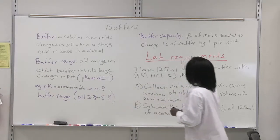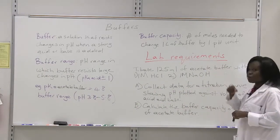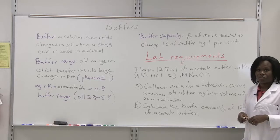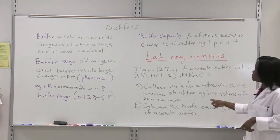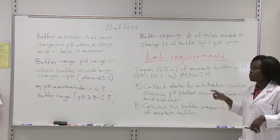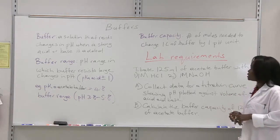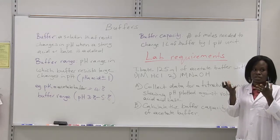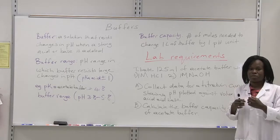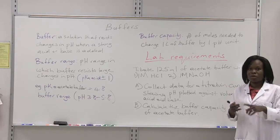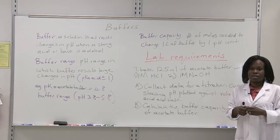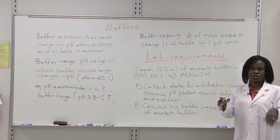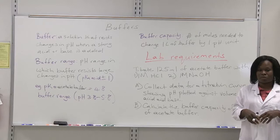Another important thing to note for the lab is buffer capacity. We're going to be able to calculate that based on the data that we collect. It is the number of moles of either an acid or a base that is needed to change one liter of buffer by one pH unit. This tells you how much acid or base you can add to your buffer that will prevent it from causing a drastic change in pH.